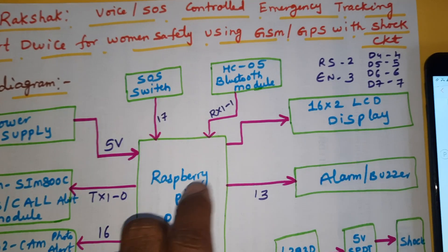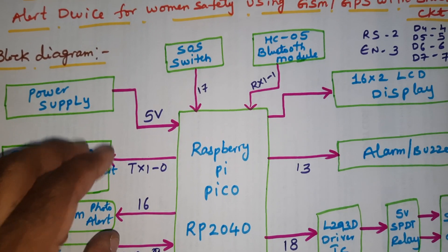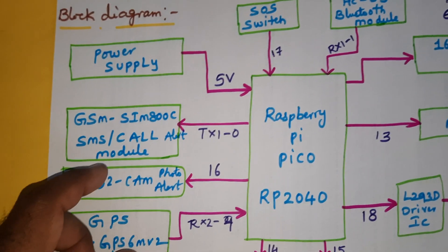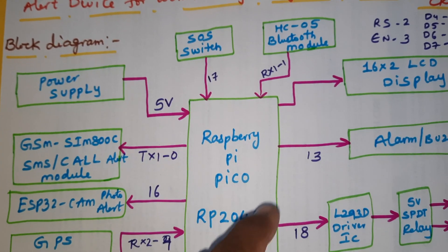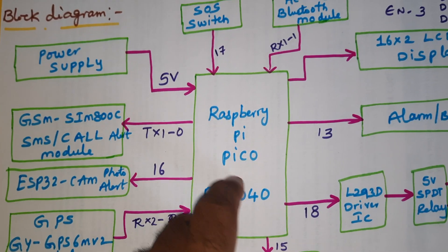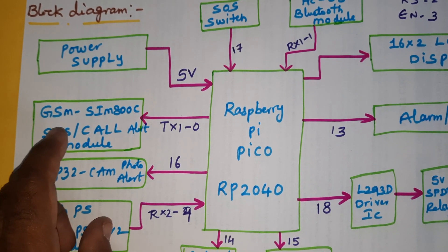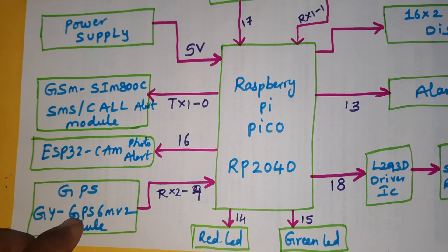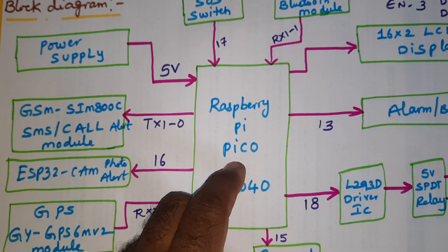In this project we have two options: SOS and voice control. For power supply, we are using 5-volt power supply modules - two modules total. One power supply is shared for some components, the other is for the ESP32 camera and Raspberry Pi. The GSM SIM800C is for SMS alert and call alert. When an emergency alert occurs, it takes GPS data from the satellite - latitude and longitude values - stores them in memory, and sends to the inserted SIM card. We support Idea, Airtel, Vodafone, BSNL 2G/3G/4G with SMS balance and internet balance.